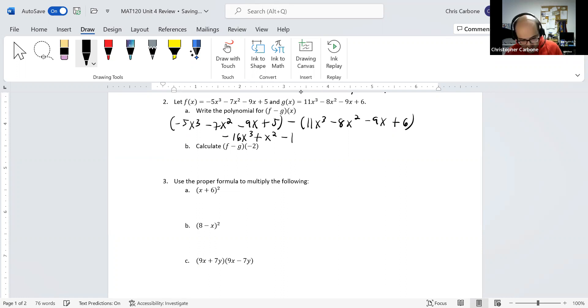So negative 16x cubed plus x squared minus 1. And then to put negative 2 into that difference we just found.